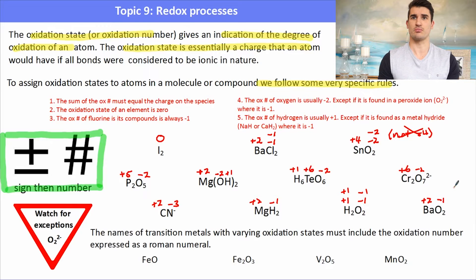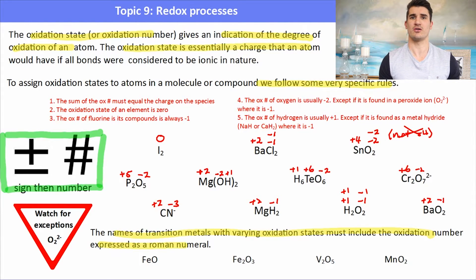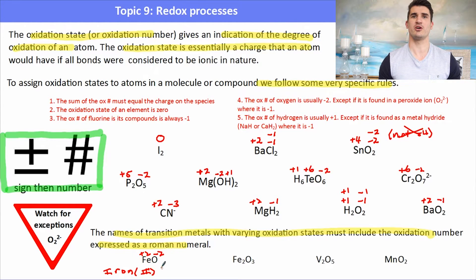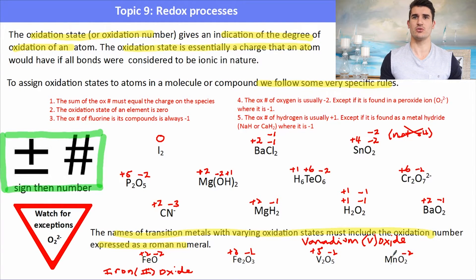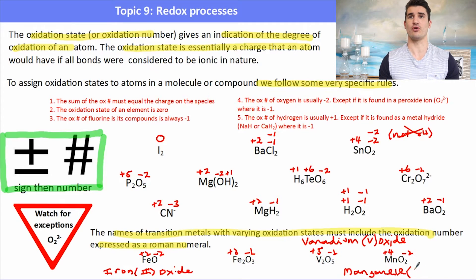For barium peroxide, barium is 2+ so the O₂²⁻ carries a total of −2, confirming it is a peroxide. When naming transition metals we must include the oxidation state using Roman numerals. FeO has iron as +2, so it is iron(II) oxide. Fe₂O₃ has iron as +3: iron(III) oxide. V₂O₅ has vanadium as +5: vanadium(V) oxide. MnO₂ has manganese as +4 — it is not a peroxide since transition metals don't form peroxides — so it is manganese(IV) oxide.